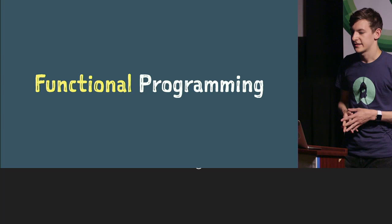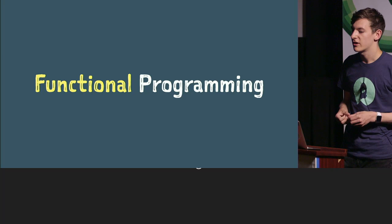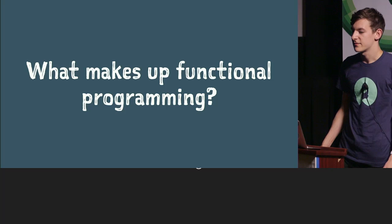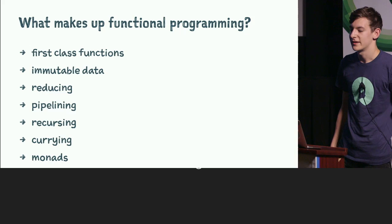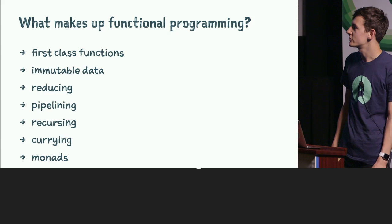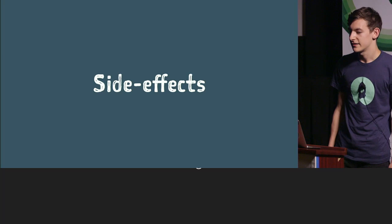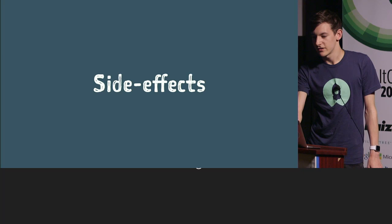Aside from DSLs, there's another way of doing declarative programming: using functional programming. This is where you use programming with pure expressions — it's a paradigm that promotes declarativeness. When people talk about functional programming they often mention characteristics such as first-class functions, immutable data, reducing, pipelining, recursion, currying, monads — but let's ignore all that. Functional code is characterized by one thing: the absence of side effects. A function doesn't rely on data outside of the current scope, and it doesn't change data that exists outside.